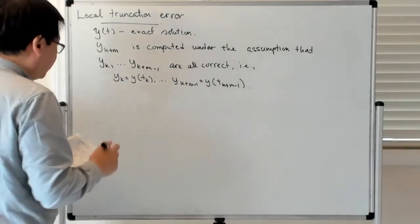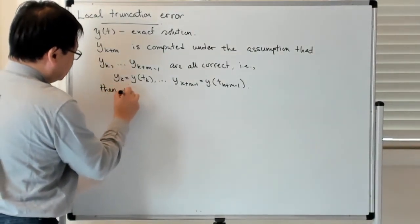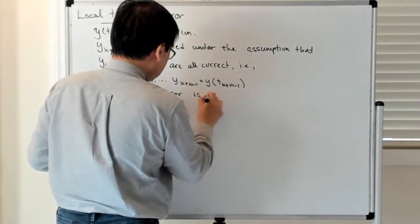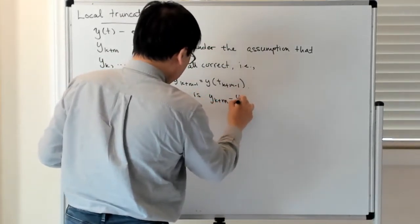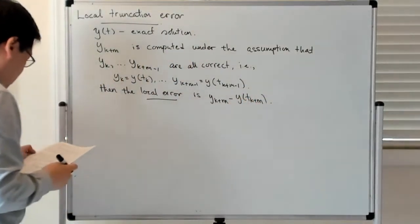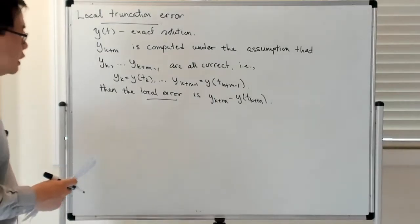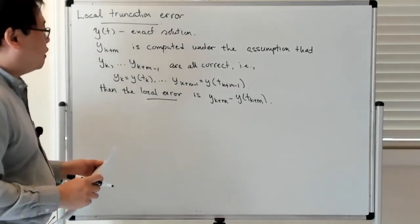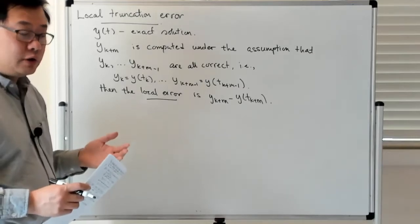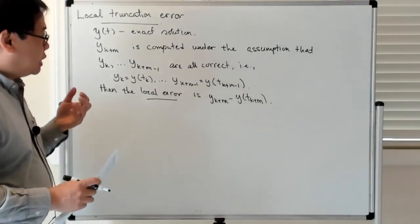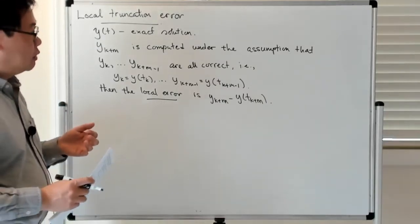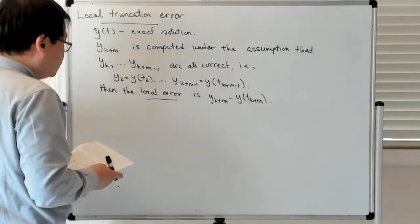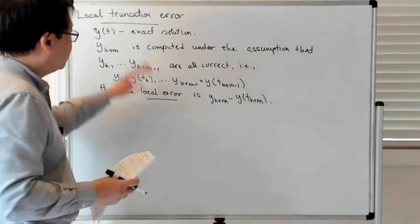So if that's true, then the local error for a multi-step method is just y_{k+m} minus y(t_{k+m}). If you recall, when we talked about the order of the multi-step method, we said you could infer the order by looking at the residual error when you substitute the exact solution into the defining expression for the multi-step method, and looking at what that residual error looks like. So how is that related to this local truncation error perspective?